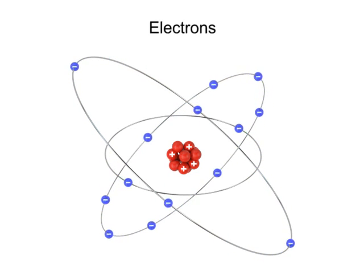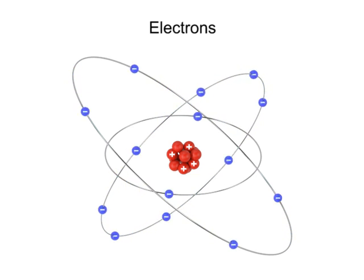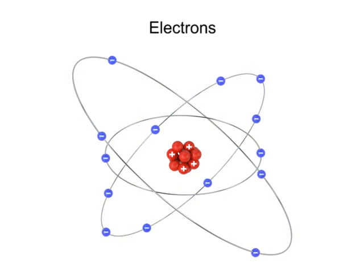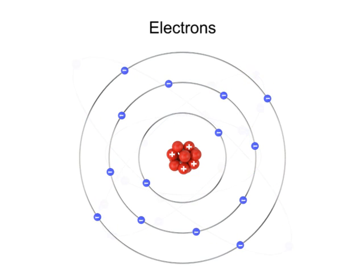Electrons move around a nucleus of an atom in concentric orbits. These orbits or shells represent different energy states that electrons can exhibit. The farther an electron is from the nucleus, the greater its potential energy.